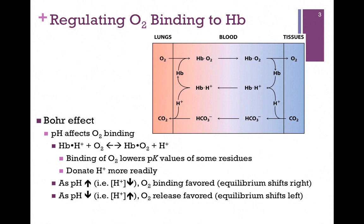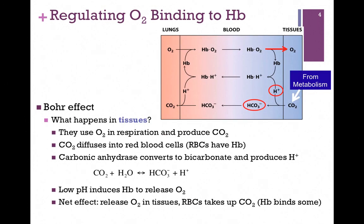Let's see how this relates to pickup and delivery of oxygen, starting with what's happening in the tissues. The tissues need oxygen in respiration, and their waste product from metabolism is CO2. CO2 is a nonpolar compound, so it readily diffuses into the red blood cells, which are carrying the hemoglobin.